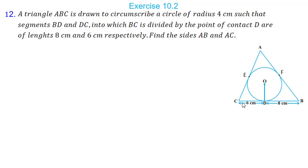Let us see question 12. A triangle ABC is drawn to circumscribe a circle of radius 4 cm such that segment BD and DC, into which BC is divided by the point of contact D, are of length 8 cm and 6 cm respectively. Find the sides AB and AC. We have given the length of OD, that is the radius, which is 4 cm, BD = 8 cm, and CD = 6 cm. We have to find the lengths AC and AB.